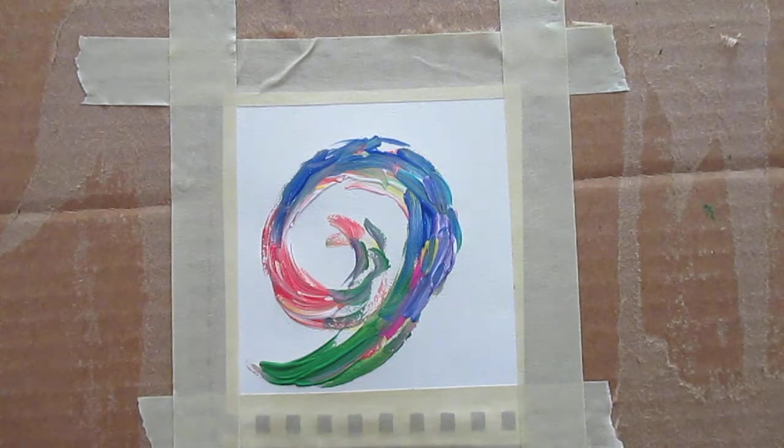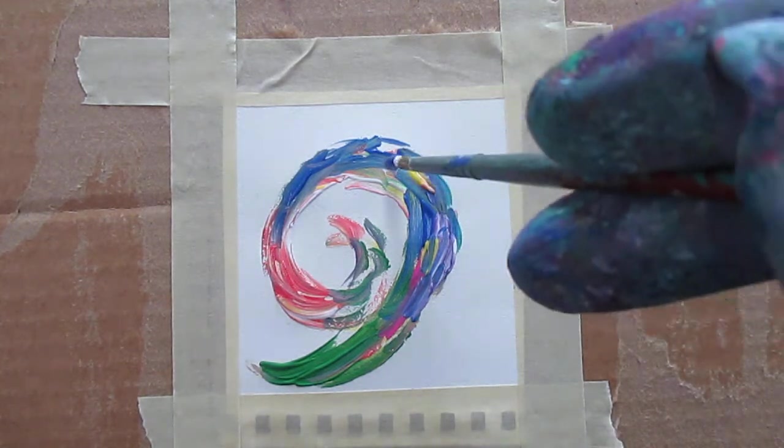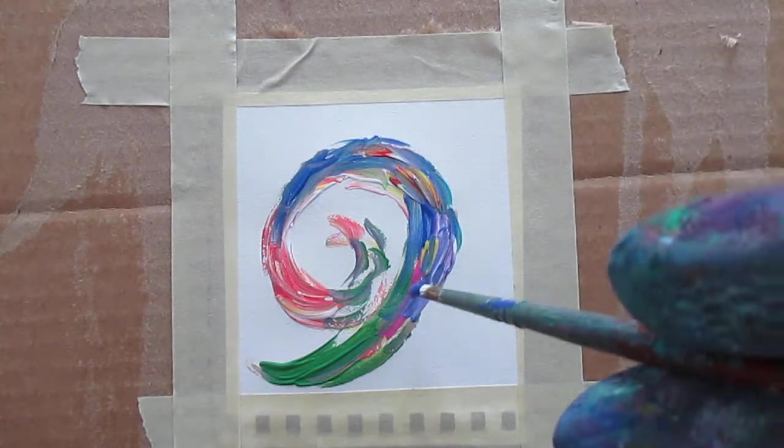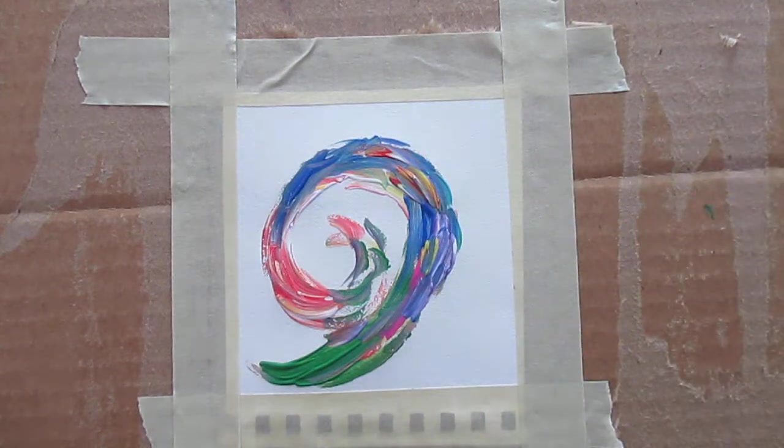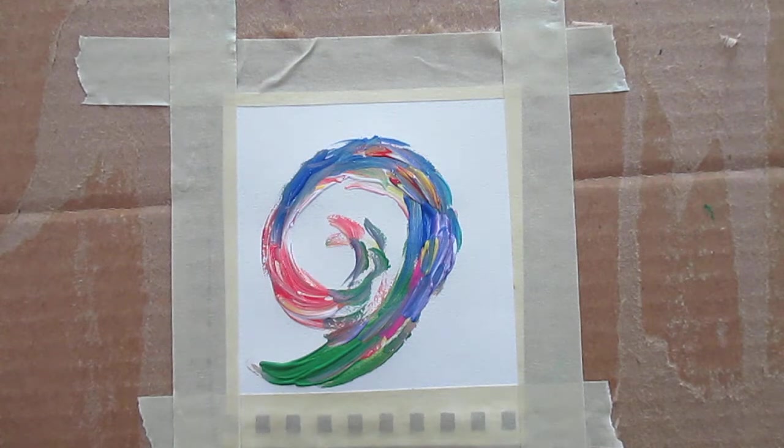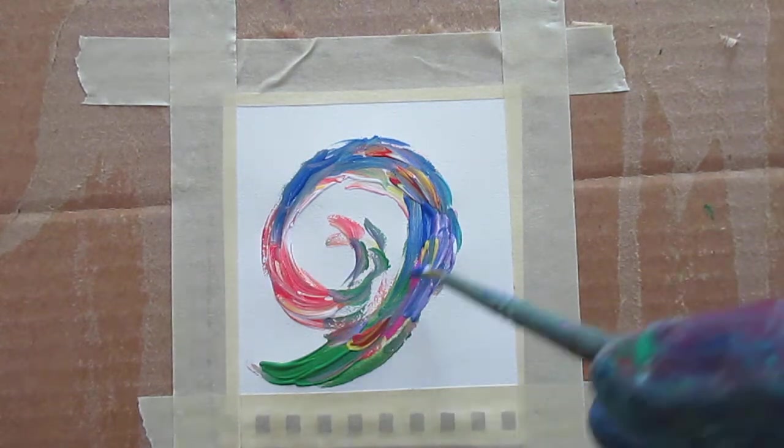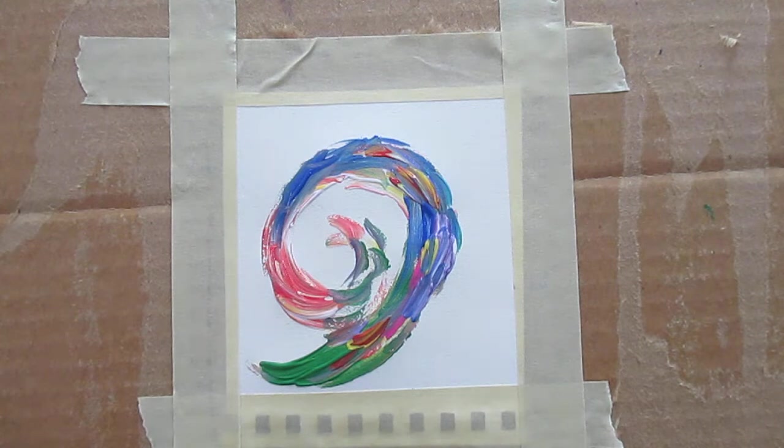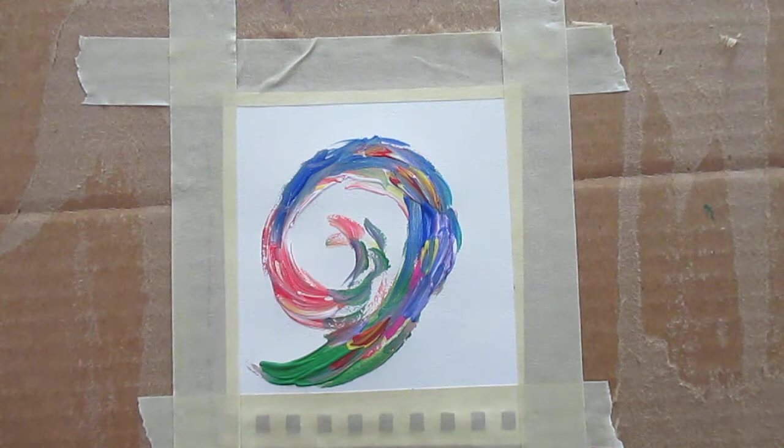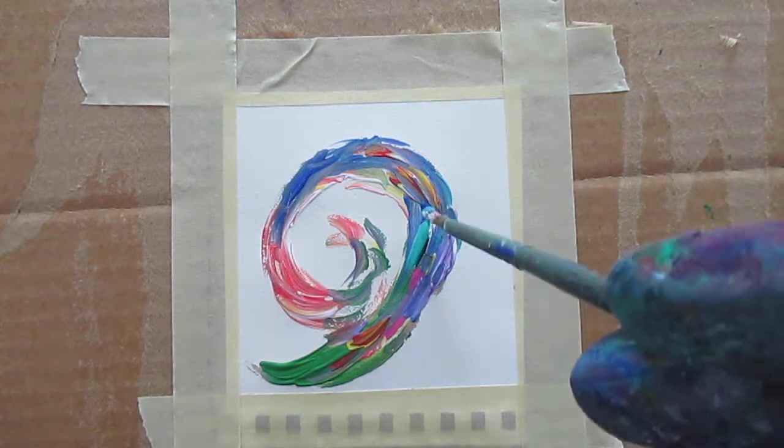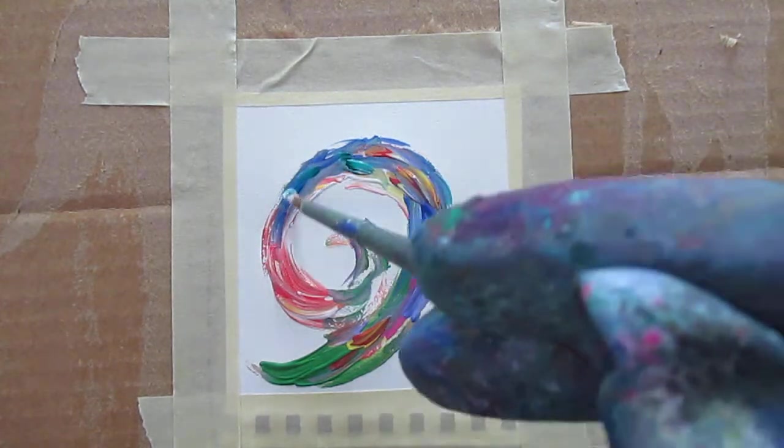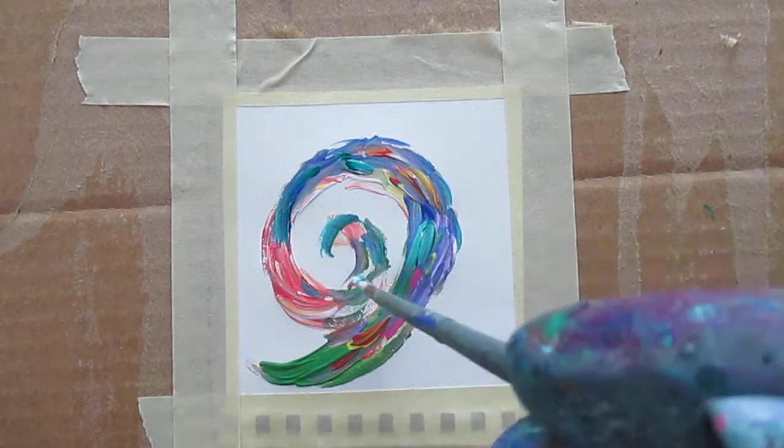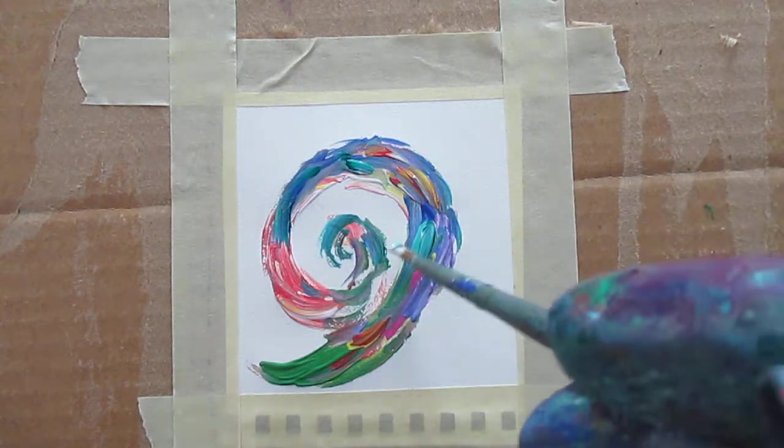I probably should change the brush soon, but I'm getting some of what I want right through there. A lot of complexity and a lot of change in the color. And then I'm going to do it again in a different direction. This is essentially the abstract shape I wanted to get.